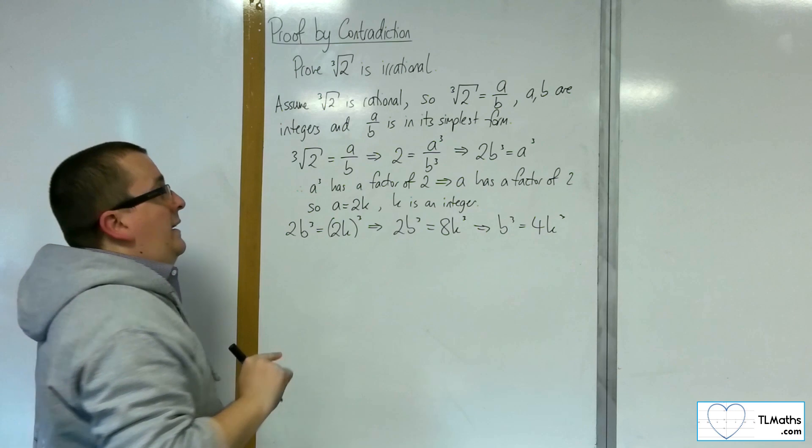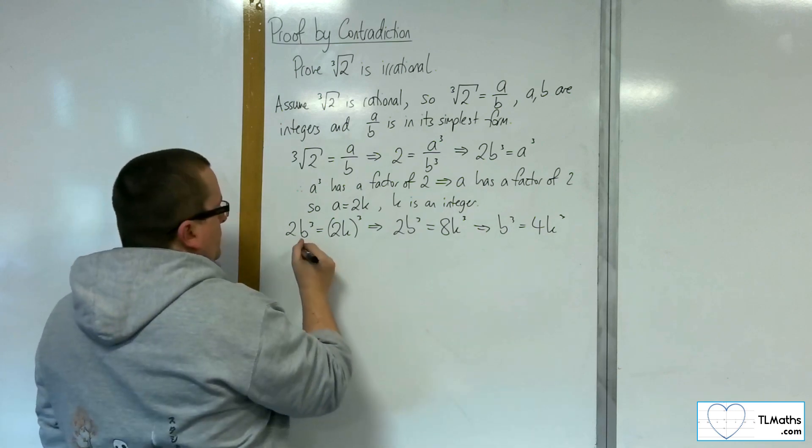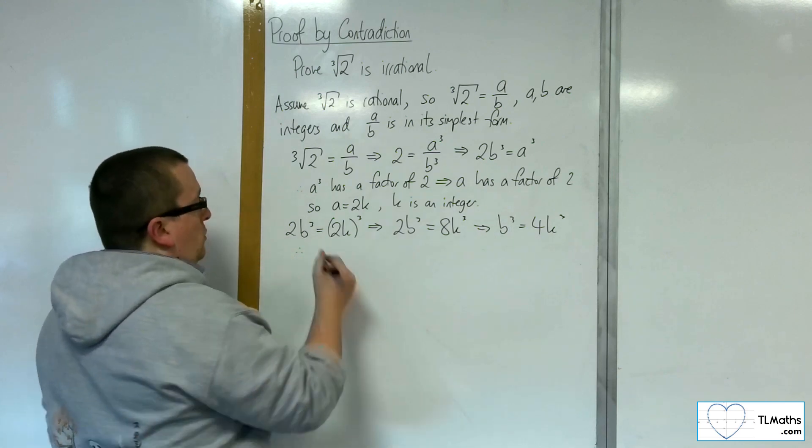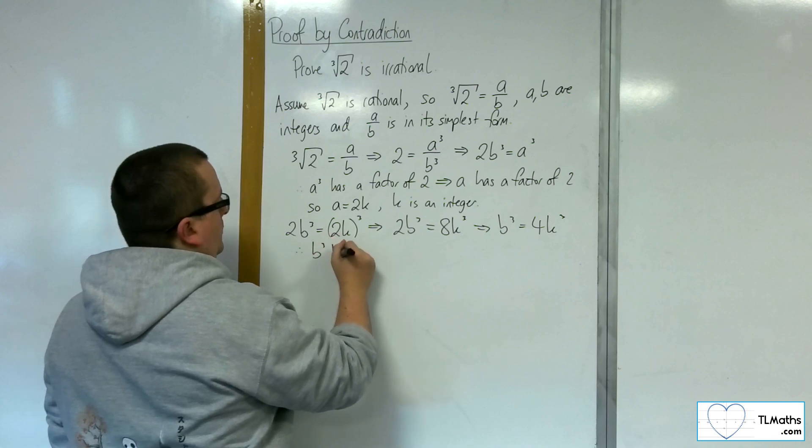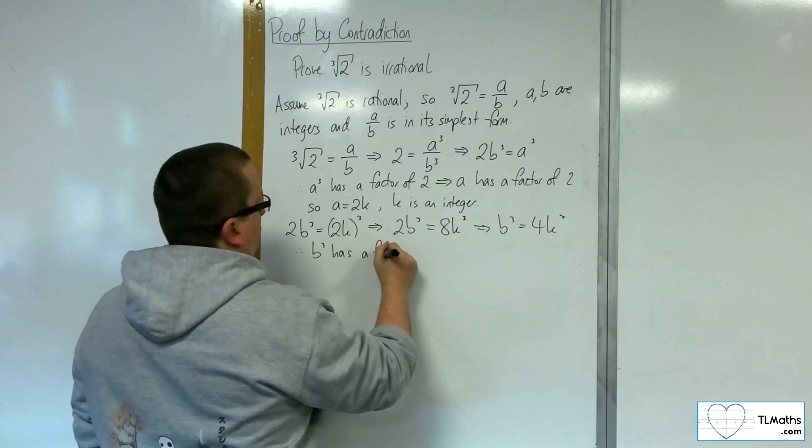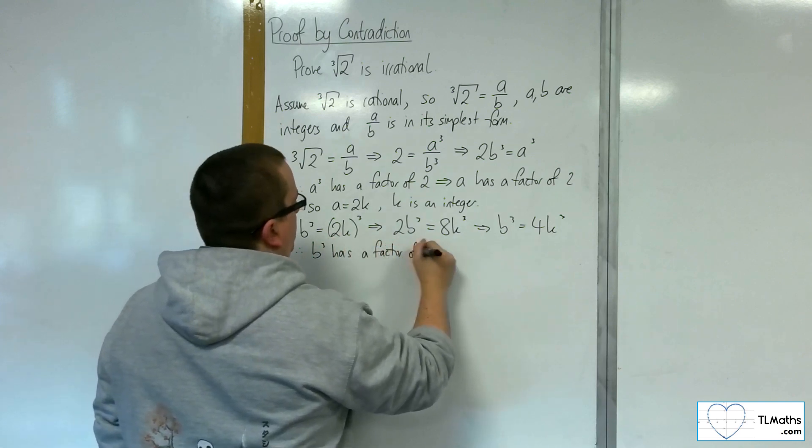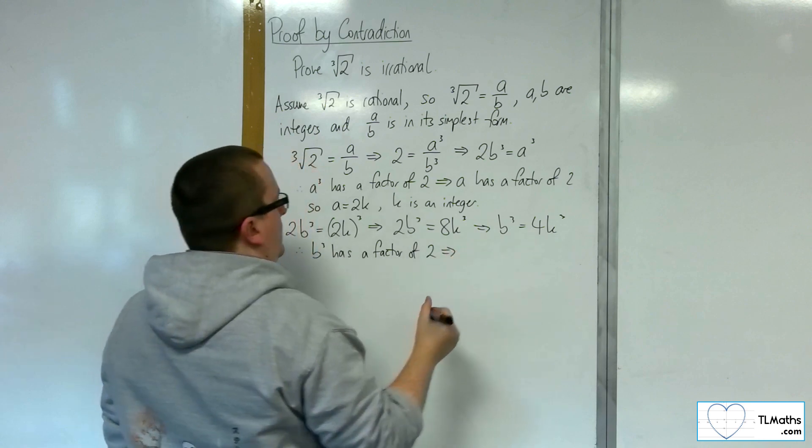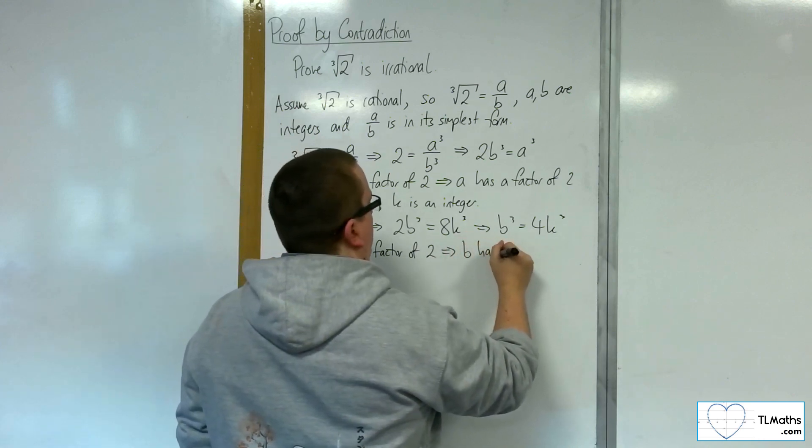So that means that b cubed has a factor of 2. In fact, it has a factor of 4. So it has a factor of 2, and that implies that b has a factor of 2.